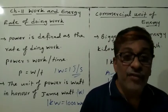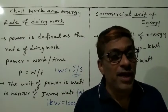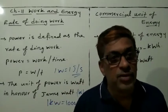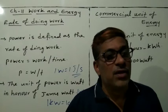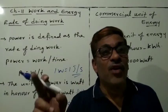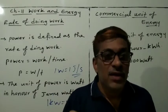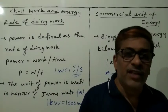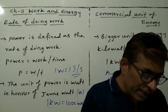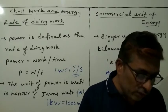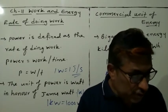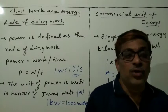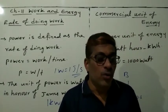The power of an agent may vary with time. This means that the agent may be doing work at different rates at different intervals of time. The concept of average power is obtained by dividing the total energy consumed by the total time taken.